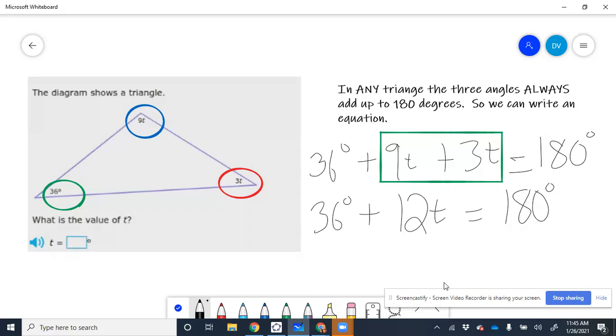And so, I'm going to change colors here. We want this T here. That's what we want to find. So we want to get that part of the problem by itself, which means we want to get rid of the 36 degrees, which means we want to subtract the 36 degrees on both sides of the equation.